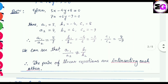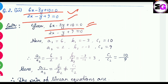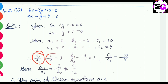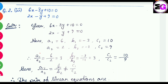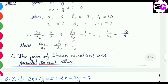The next problem is 6x minus 2y plus 10 equals 0 and 2x minus y plus 9 equals 0. Here a1 is 6, a2 is 2, b1 is minus 3, b2 is minus 1, c1 is 10, and c2 is 9. So a1 by a2 equals 6 by 2 which is 3, b1 by b2 equals minus 3 by minus 1 which is 3, and c1 by c2 equals 10 by 9.